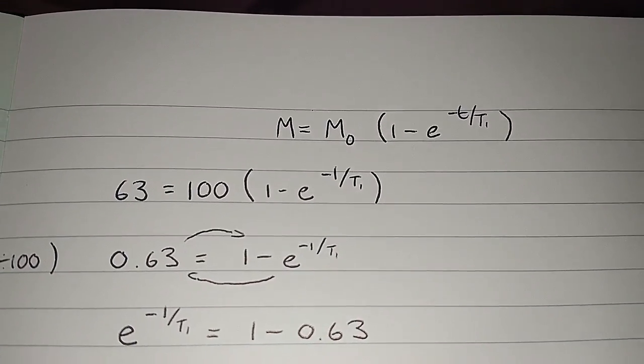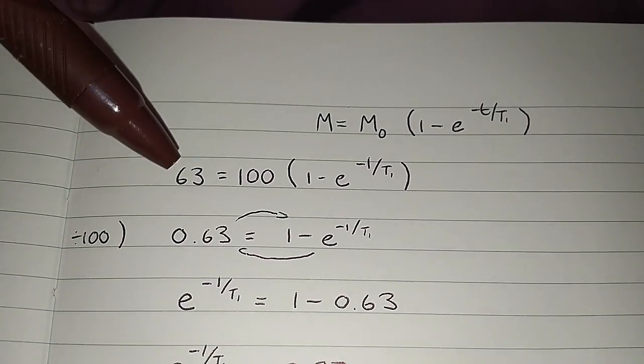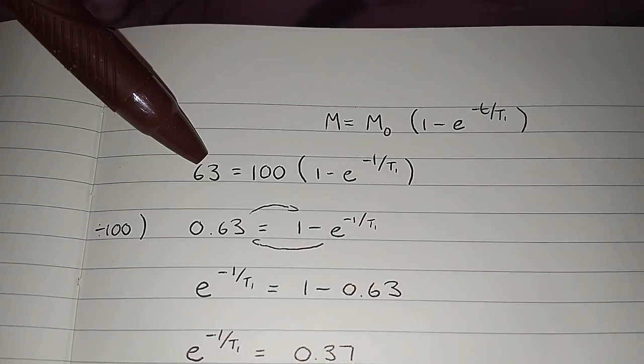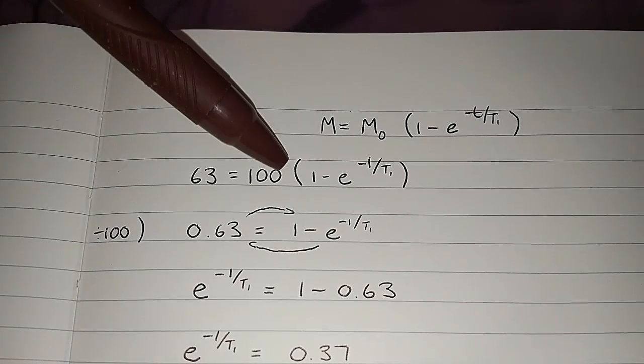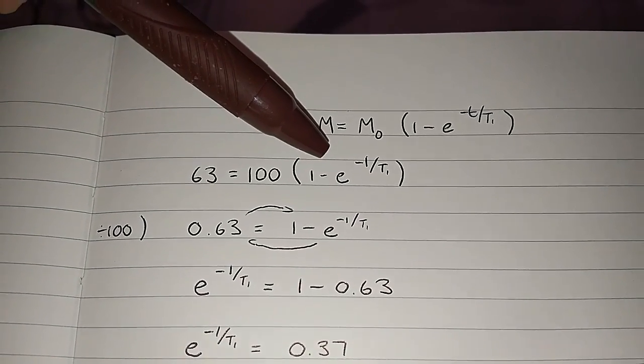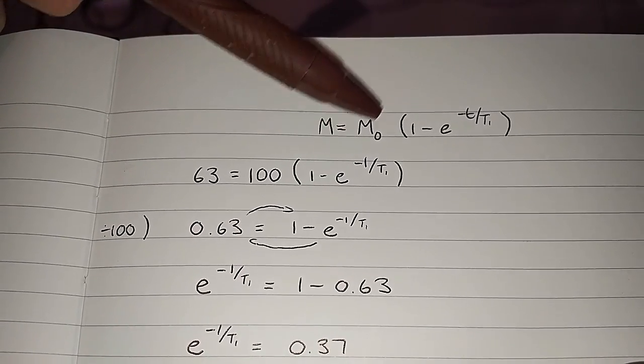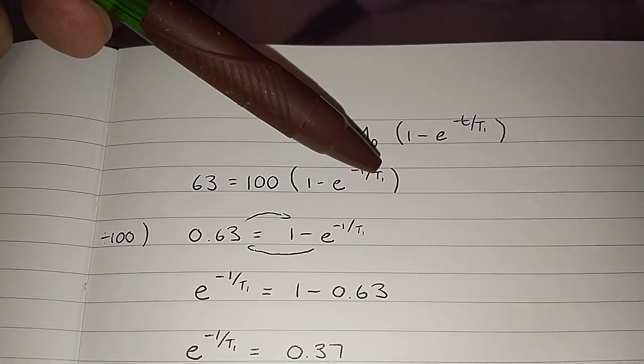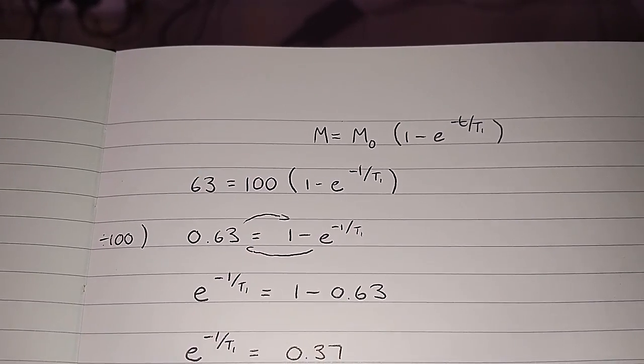So there's our formula again, and just with all the numbers plugged in, we've essentially got the 63 is equal to 100 brackets 1 minus e minus 1 seconds put in over there and over T1.